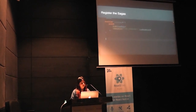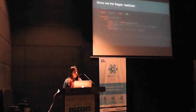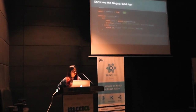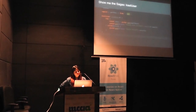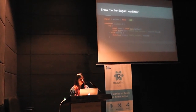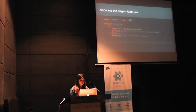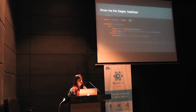I registered the sagas — I needed two sagas: load user and dashboard. For load user, the saga calls the get user API using call (a blocking effect), and once it gets a success response, it dispatches the fetch user success action using put. If there's an error, it dispatches a failure action. That was quite simple.